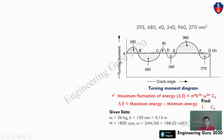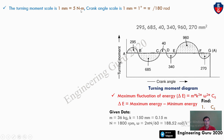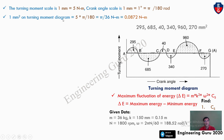From the turning moment diagram, the scale is: 1 mm = 5 N·m on the y-axis, and 1 mm = 1 degree on the x-axis. We must convert degrees to radians, so multiply by π/180. Therefore, 1 mm² on the diagram equals 5 × (π/180) N·m — always multiply both the x-axis and y-axis scales.